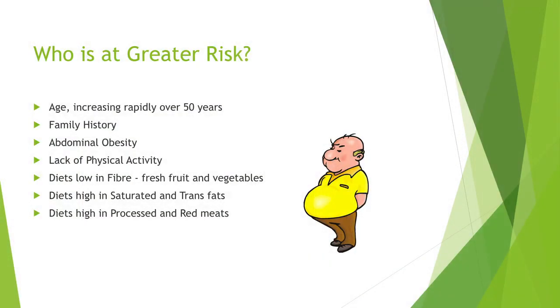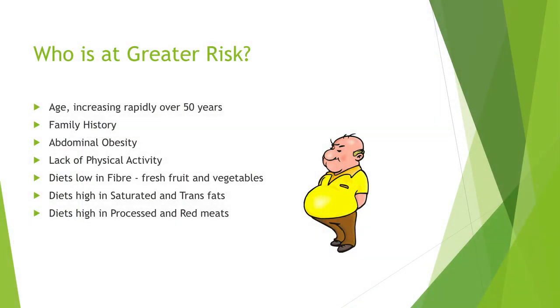So who is at greater risk? Age is one of the first factors — increasingly over 50 years. Family history is another, which you obviously can't change, but there are other risk factors that you can change. Another is abdominal obesity — the fat that surrounds your stomach — which is more damaging than fat stored in legs or other body parts because it surrounds your organs. Lack of physical activity, diets low in fibre, diets high in saturated and trans fats, and diets high in processed and red meats are also risk factors — but we'll go through fats and fibre in upcoming slides.